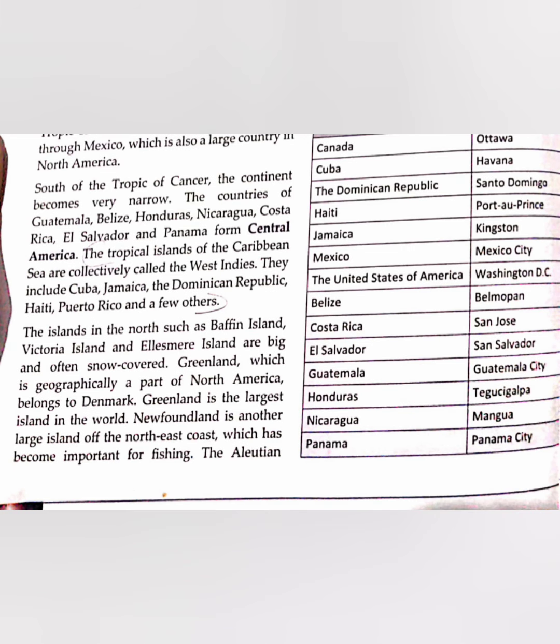Greenland is geographically a part of North America but actually belongs to Denmark. Greenland is the largest island in the world. Newfoundland is another island on the northeast coast of North America and is very important for fishing, as many varieties of fish are found there.